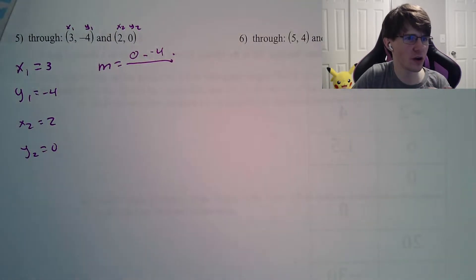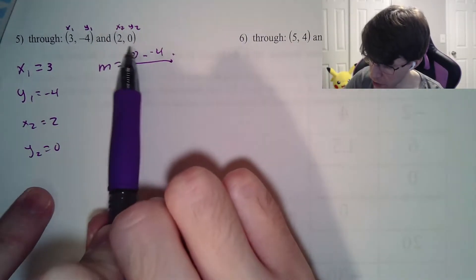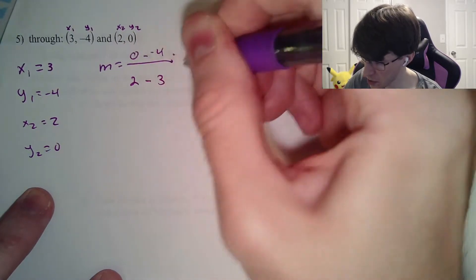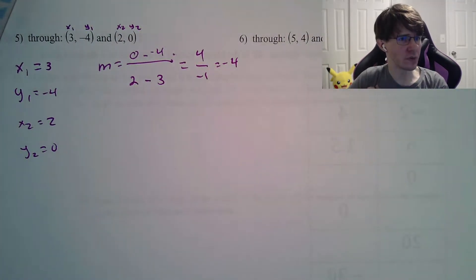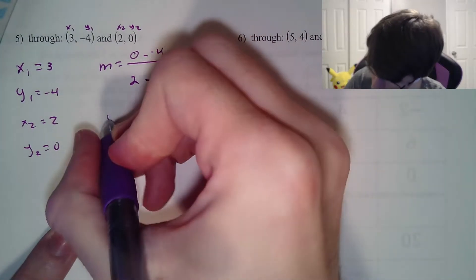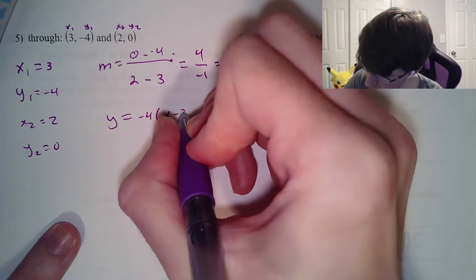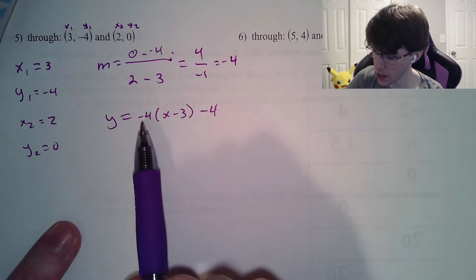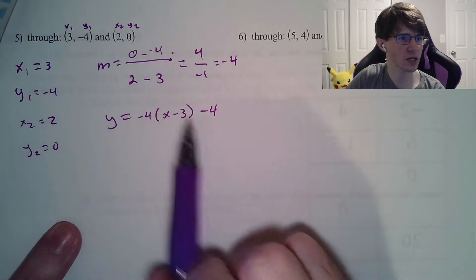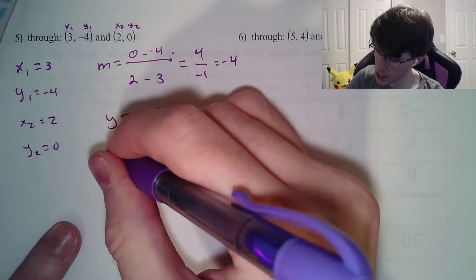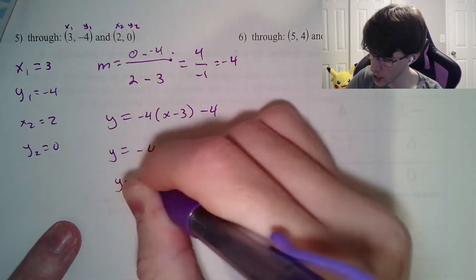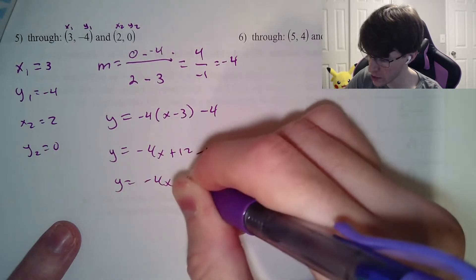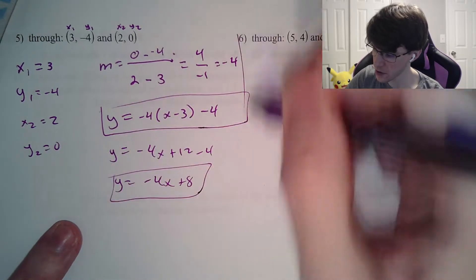So y2 minus y1 over x2 minus x1 gives us 4 divided by negative 1, or just negative 4, which means it goes down for every single time you go to the right 1. Our equation: y equals negative 4 times x minus 3, minus 4, because it's m times x minus x1 plus y1. That's our point-slope form. To get slope-intercept, we distribute: negative 4x plus 12, minus 4. Adding like terms: 12 and negative 4 make 8. So y equals negative 4x plus 8.